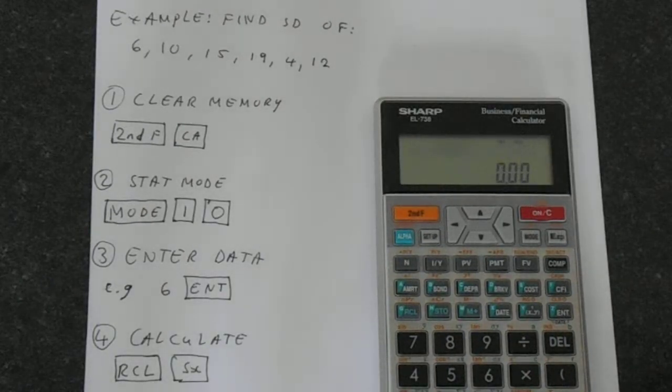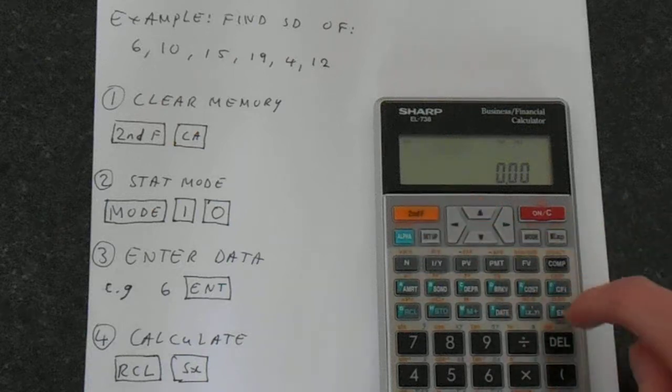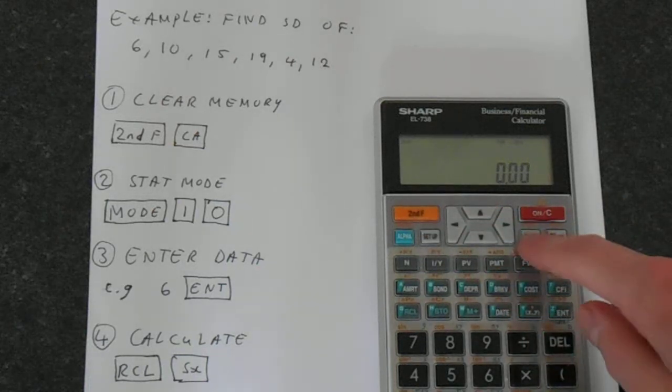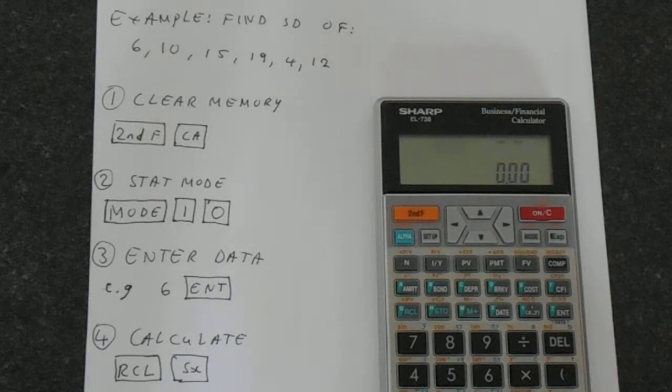First step, as always, clearing the memory. Second function, and then the CA button on top of mode. That's sufficient for what we are doing. You don't need to worry about the cash flow memories.